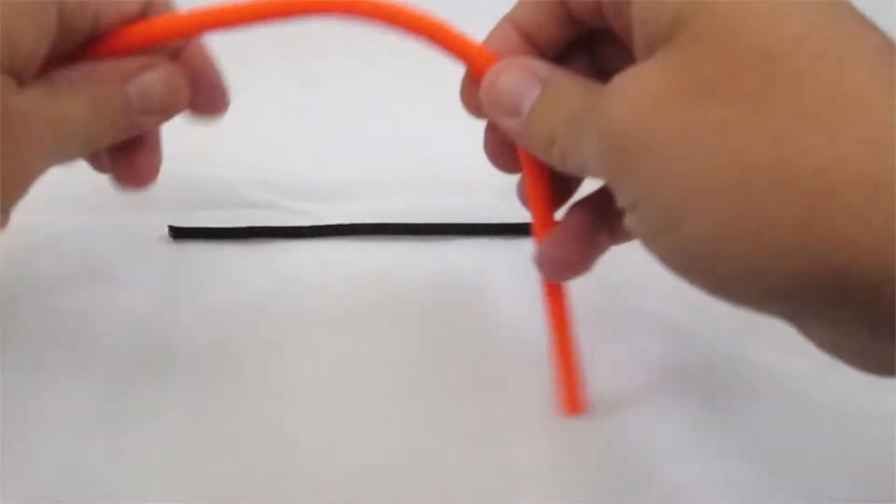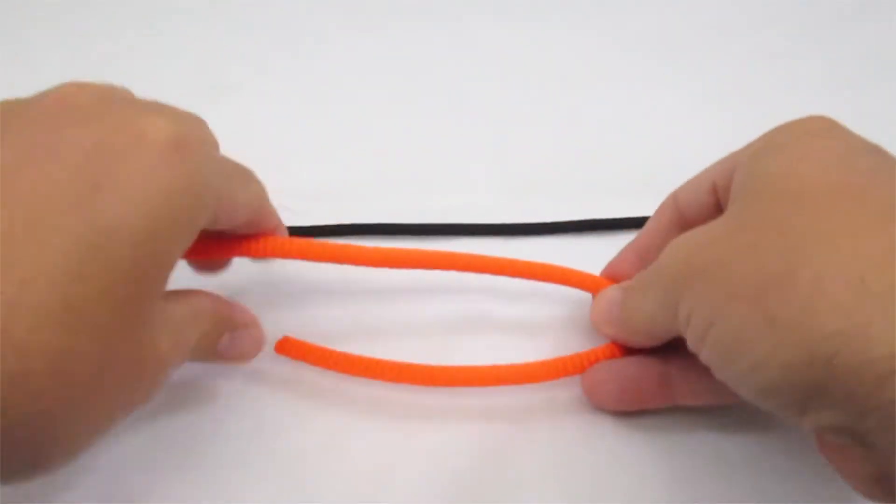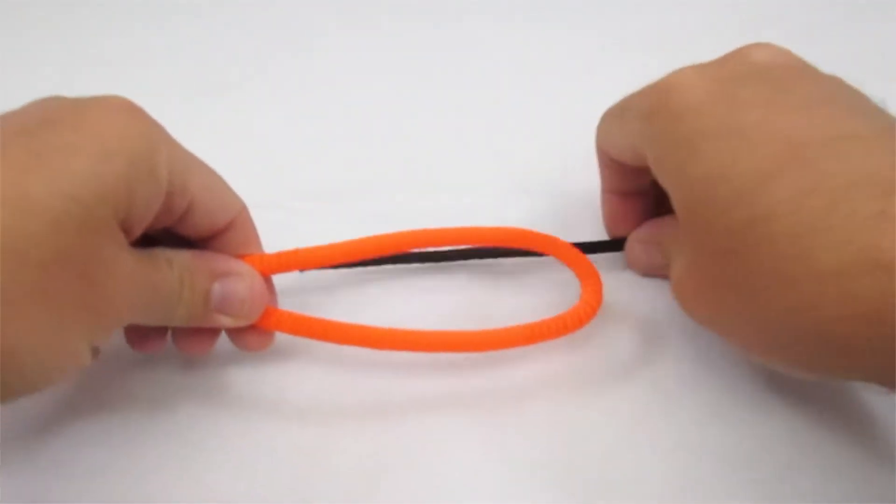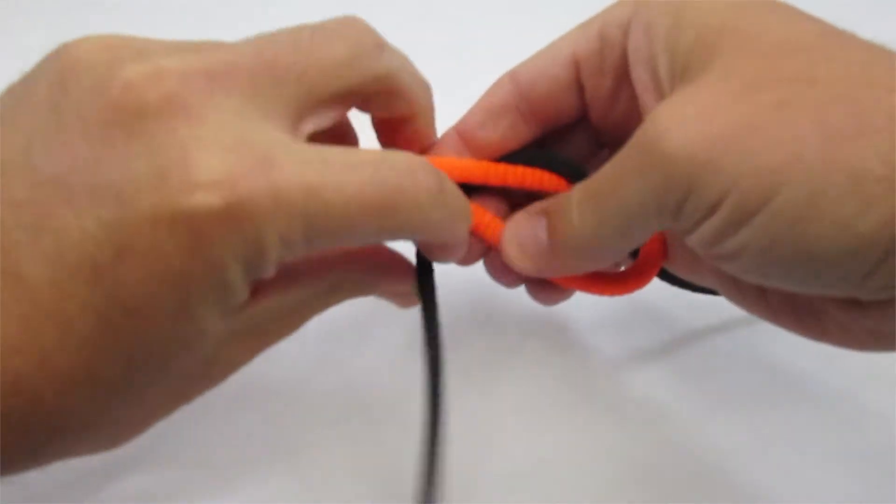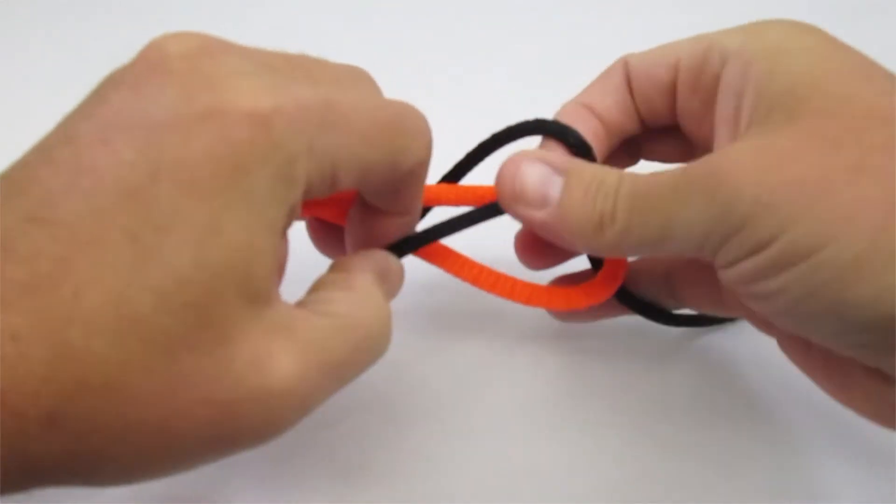You'll start with the larger rope and simply double that over. Then you will take the smaller rope, pass that through the loop, wrap it around the back, and then pass it back through itself here.